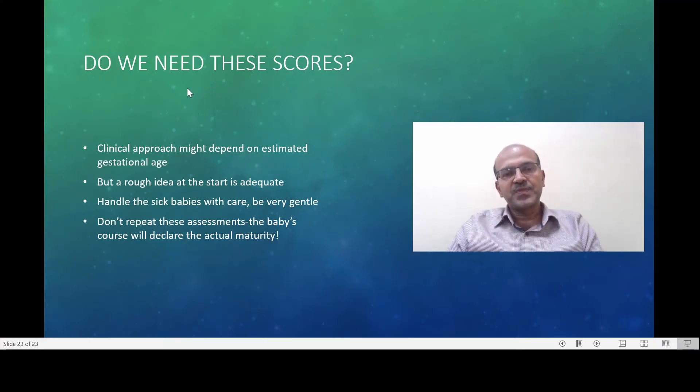Do we need these scores? There is a difference in clinical approach depending on the estimated gestational age. It also helps in prognosticating, but we should keep in mind there is always a variability of plus or minus one to two weeks, and when we prognosticate to the family we should keep that in mind as well.